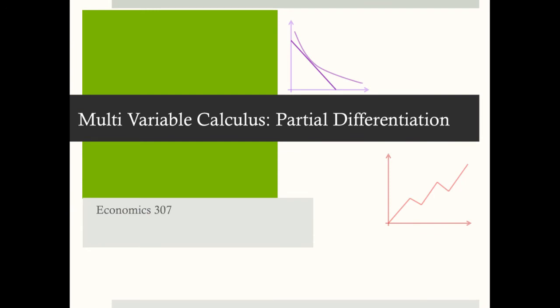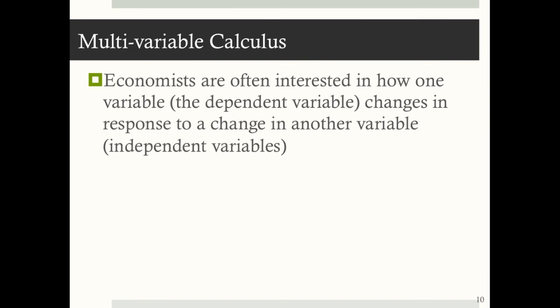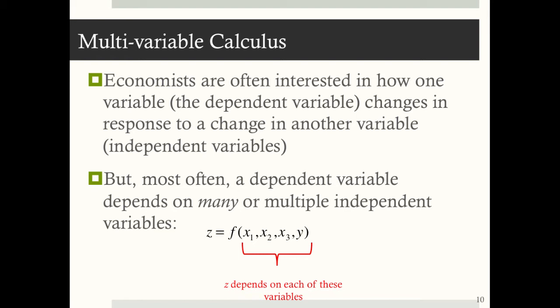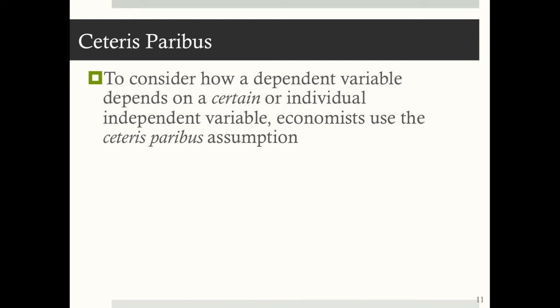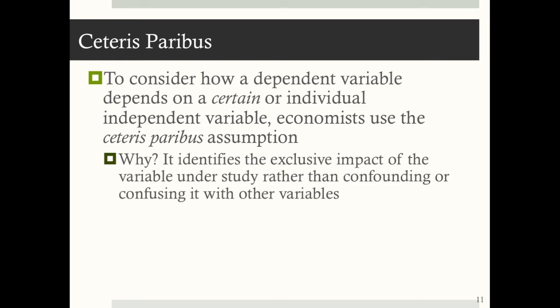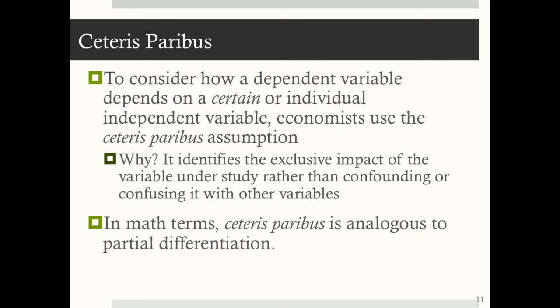Multivariable calculus: partial differentiation. Economists are often interested in how the dependent variable changes in response to a change in one of the independent variables. But most often a dependent variable depends on multiple independent variables. So consider z equals f of x1, x2, x3, and y. To consider how z depends on one individual independent variable, economists use the ceteris paribus assumption — it identifies the exclusive impact of the variable under study rather than confounding it with other variables. And in math terms, ceteris paribus is analogous to partial differentiation.